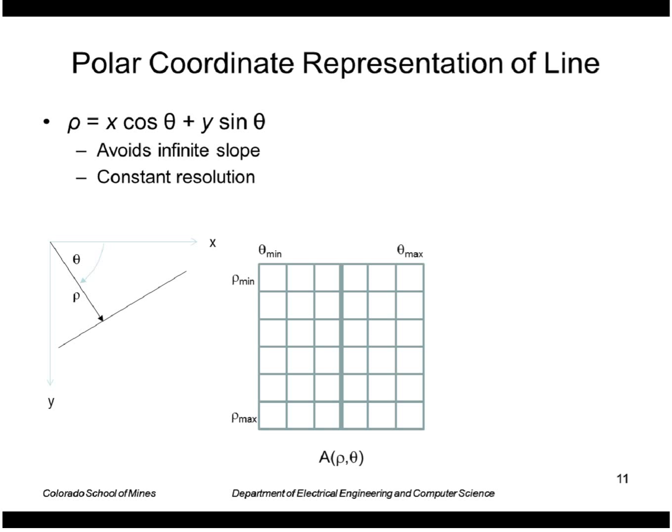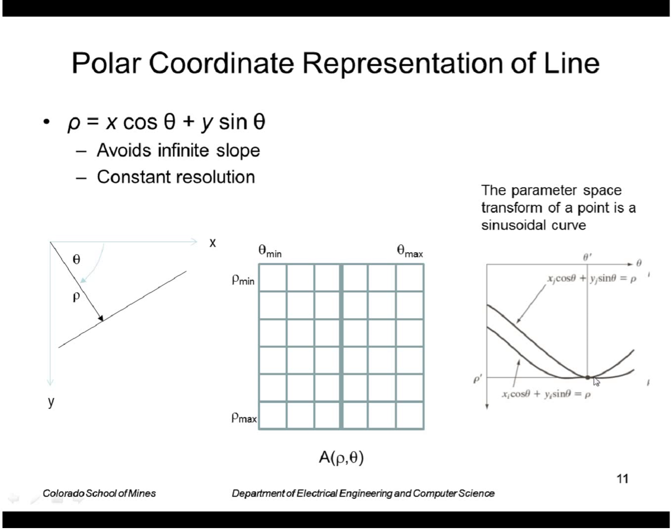So the parameter array then represents values of theta and rho. And a point does not generate a line in parameter space. Now it generates a sinusoidal curve like this. But that's okay—we can still find intersections of those to find our common lines.